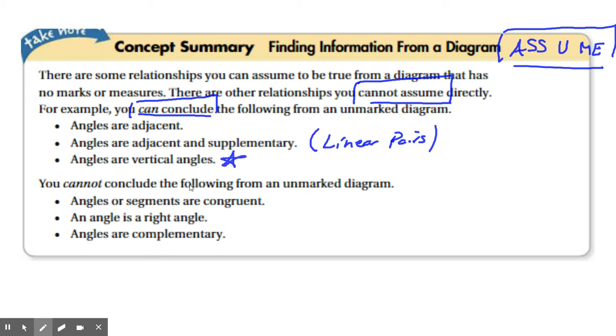Again, if two lines intersect, you can assume that the V up, V down, the V left, V right, they're vertical angle pairs. Very important. Okay.